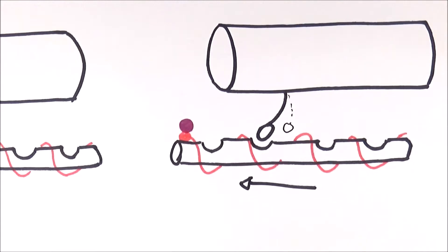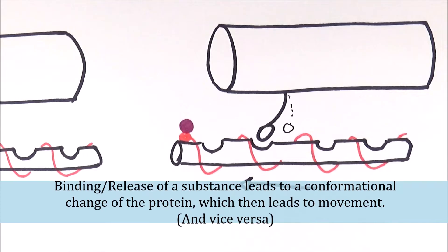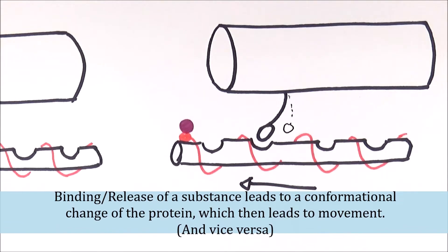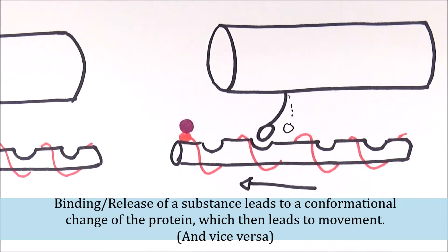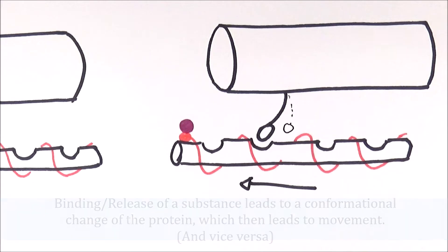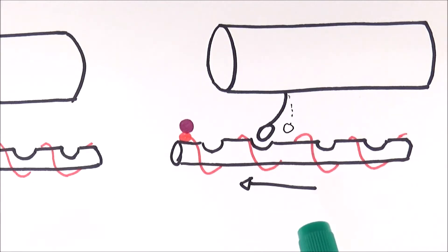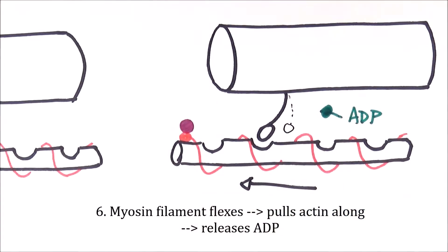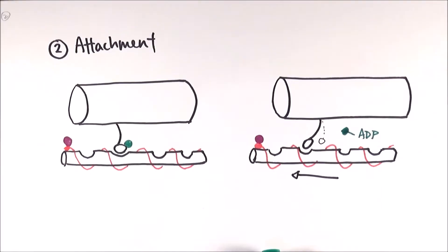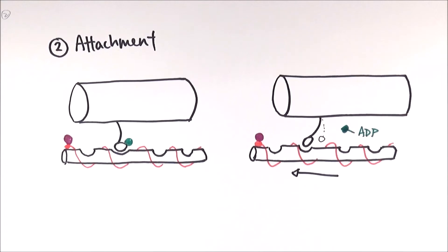Whenever there is binding, there will be a conformational change, which leads to a movement. Or when there is movement, that will lead to something being released or bound to it. So in this case, the myosin head binds to the binding site, flexes and moves the actin filament along. In that process, it will release the ADP from the myosin head. And that is the attachment and the movement as well.